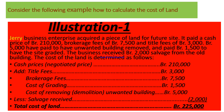The cost of the land is determined as follows: cash price $210,000, title fee $3,000, brokerage fee $7,500, cost of grading $1,500, cost of removing unwanted building $5,000, less salvage received $2,000. The total cost of the land is $225,000. To calculate, add all costs and deduct the salvage received to arrive at the total cost of the land.